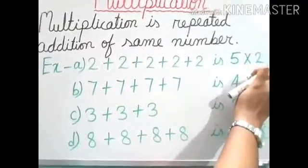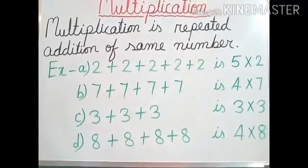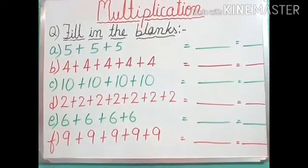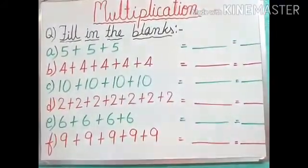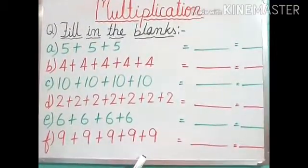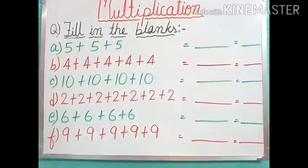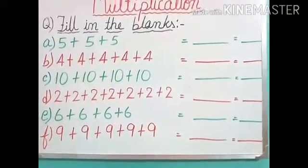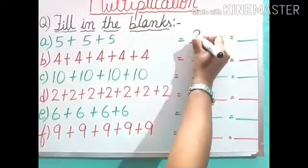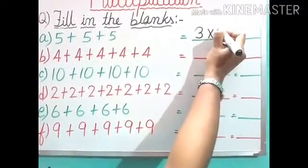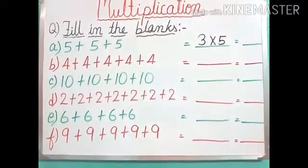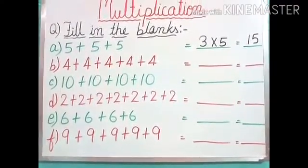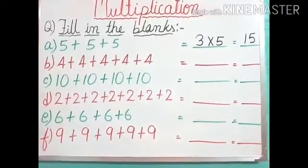Based on this, let us see some questions. You can see here I have given fill-in-the-blanks. I am doing the first one — we will count the digit first: 1, 2, 3. So 3 times 5 is given, and we write 3 multiplied by 5. What is the answer? 3 fives are 15. So like this you will do all the questions in your maths copy at home.